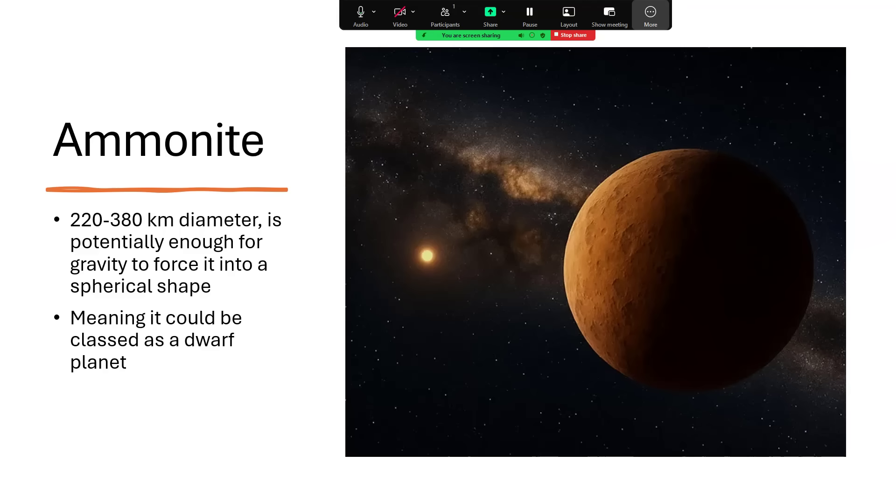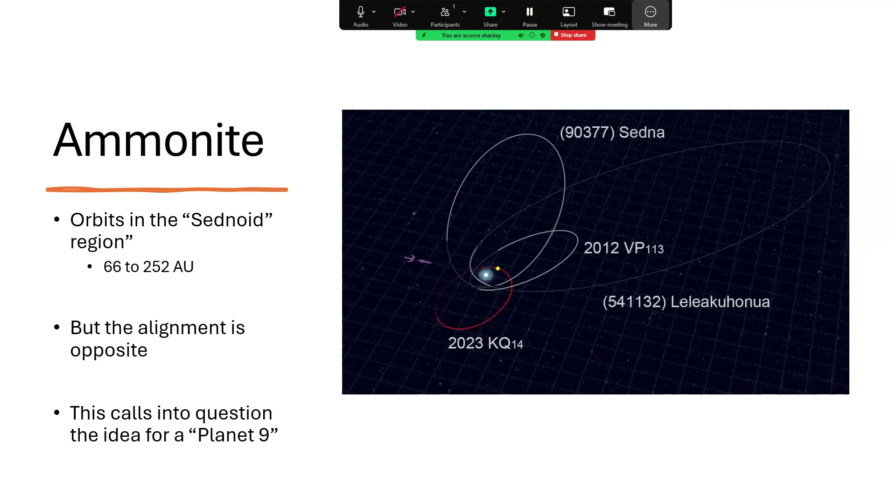It's actually slightly larger in all probability than Vesta, the asteroid in the inner part of the solar system, which just fails the criteria because it's a bit off round at about 250 kilometres. So if this is at the larger end, I think it's got a chance. And if it's at the lower end, maybe it won't quite make the grade.